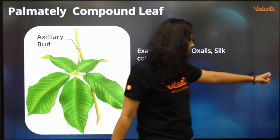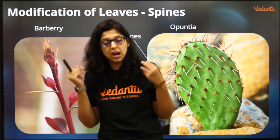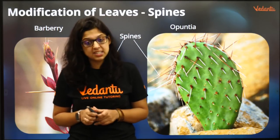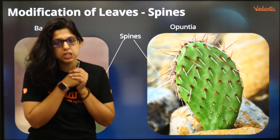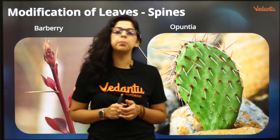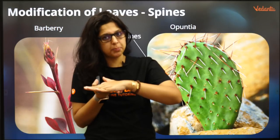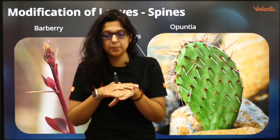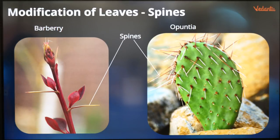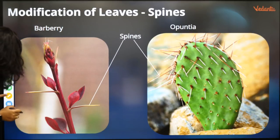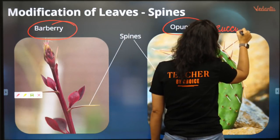Silk cotton is an NCERT example and has come in MCQs at least 7-8 times. I'm going to share charts with you. Now let's come to the modifications of leaves. The main function of a leaf is exchange of gases and absorption of sunlight via chlorophyll. But in barberry and cactus, leaves are modified into spines. Cactus is a succulent xerophyte.